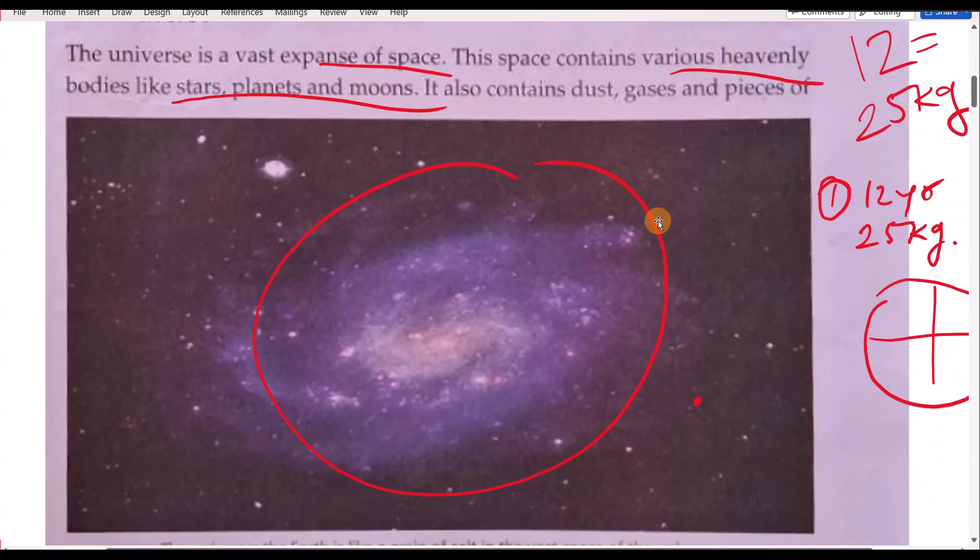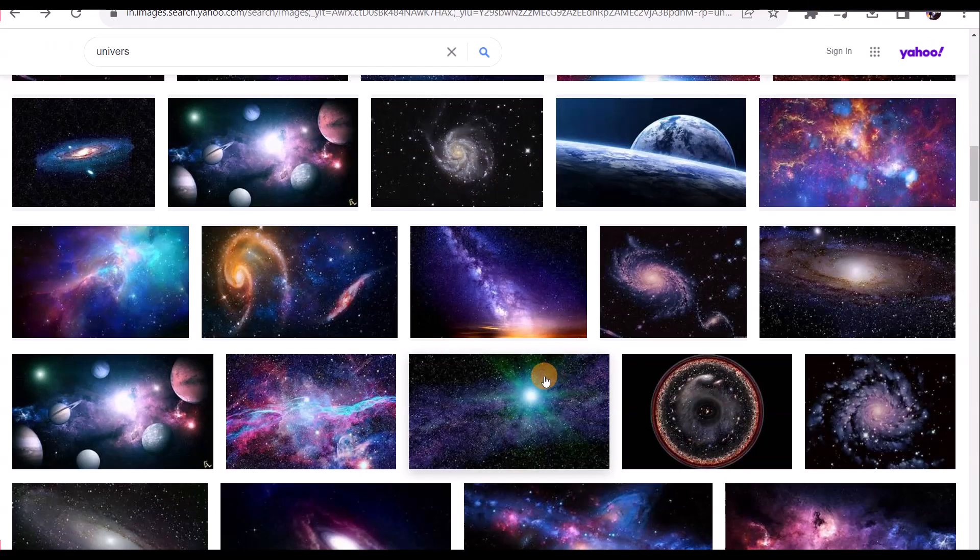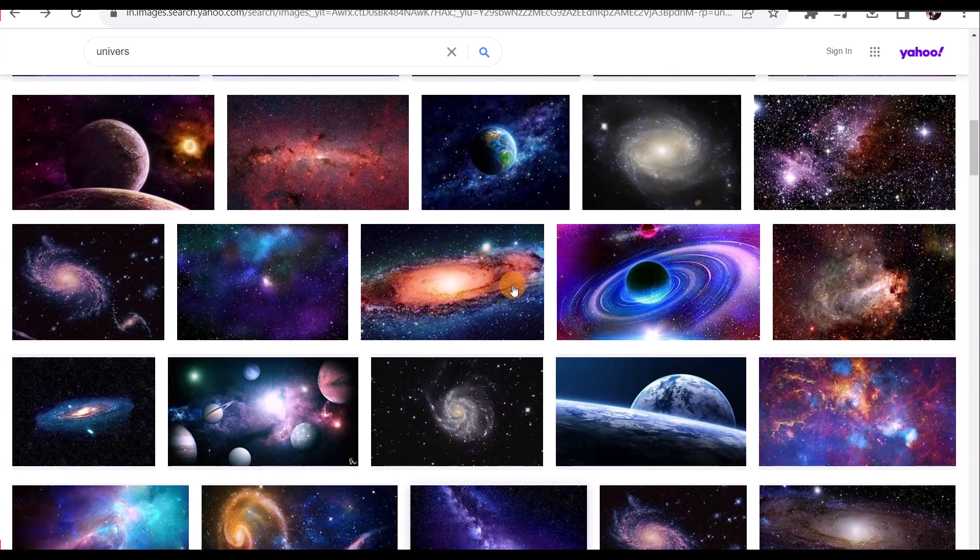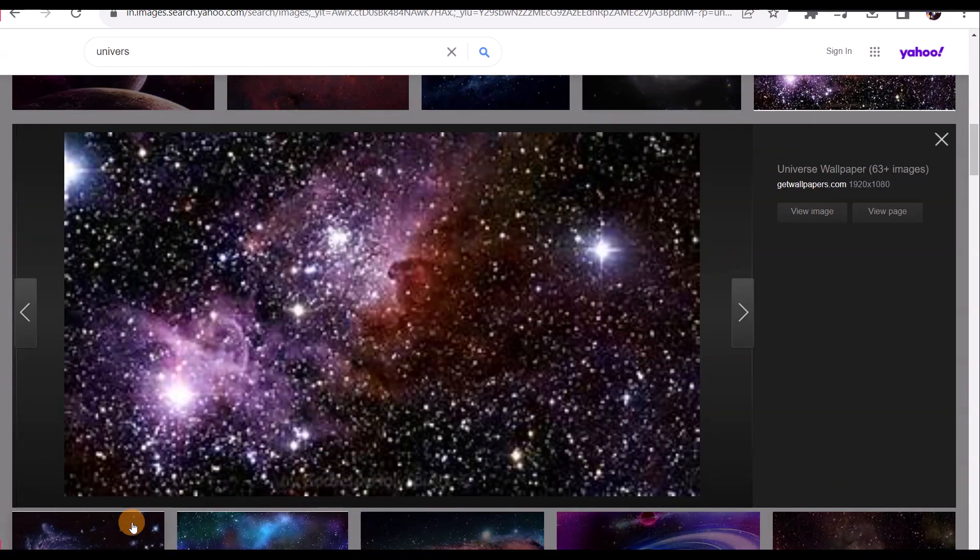I will show you more pictures about universe. Our universe exactly looks like this. Okay, here you can see the number of planets, stars, moons. And our Earth and solar system is a very, very small part of this universe. See, in this picture, you can see lots and lots of stars and planets.